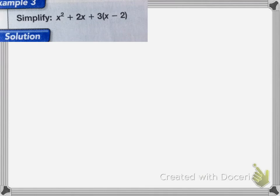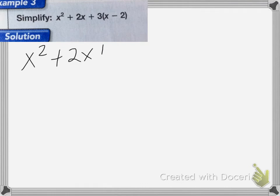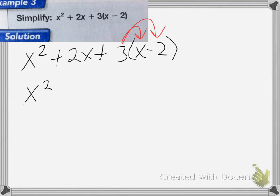On this one, to simplify we use the distributive property first to get rid of the parentheses. We have x squared plus 2x plus 3 times (x minus 2). Applying the distributive property, we get x squared plus 2x plus 3x minus 6.